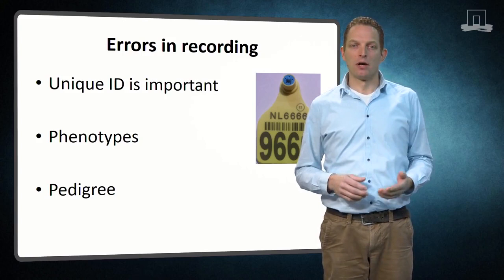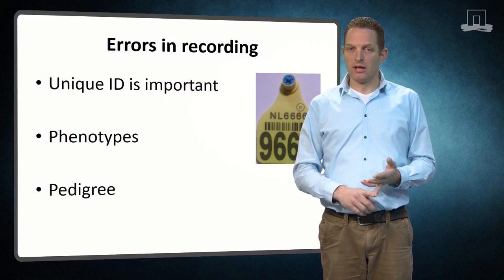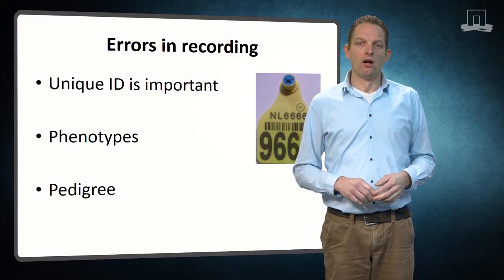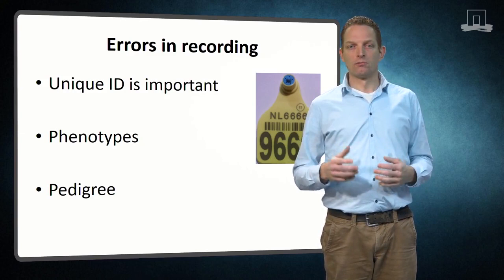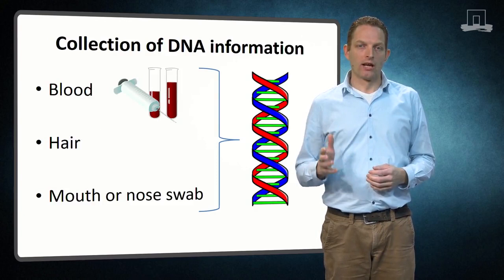Pedigree errors may be caused by mixing up parents or semen at mating, unnoticed matings, mixing up of young animals shortly after birth, or administrative mistakes. From experiences in parentage testing, it is known that up to 10% or sometimes even more of the animals may have an incorrect pedigree.